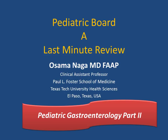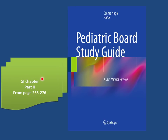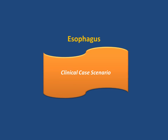Hi, my name is Osama and I will continue the pediatric board review series explaining the content of the pediatric board study guide. In this video, we'll discuss part two of the gastroenterology chapter — upper GI and part of the lower GI disorders. In part two, from page 265 to page 276, we'll start from the top down with a clinical case scenario.